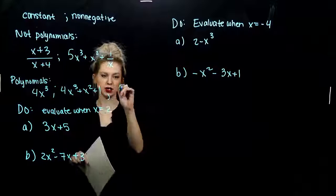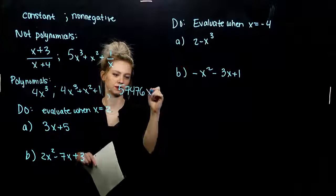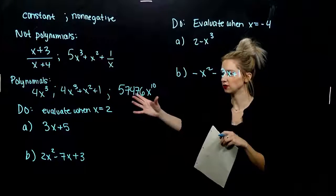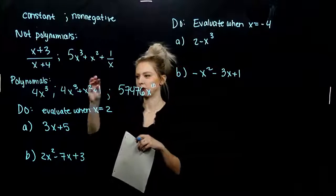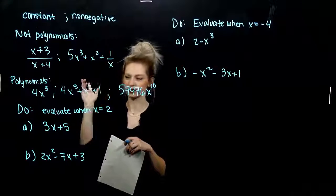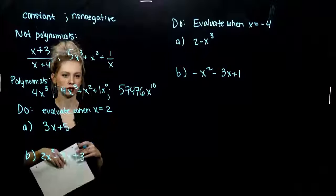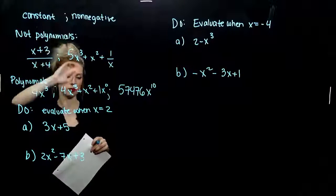We could even have it really huge: 5, 7, 4, 7, 6, whatever, to the 10th. Still a polynomial. Constant on the front. Positive power. Positive power. For zero power, that's fine. We could rewrite in here, 1 times x raised to the zeroth, and it still fits our definition of the polynomial.